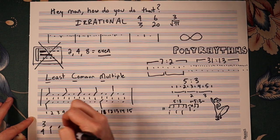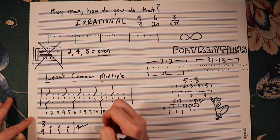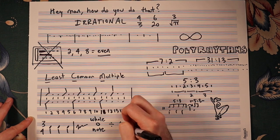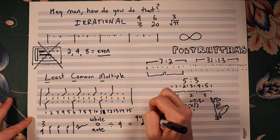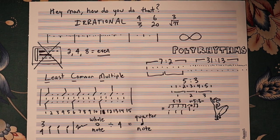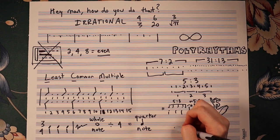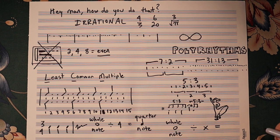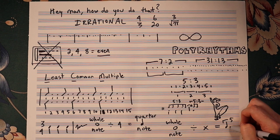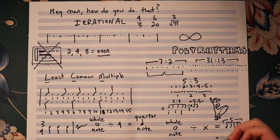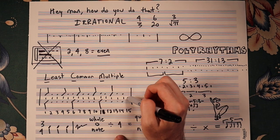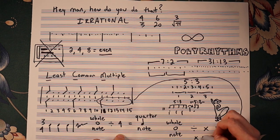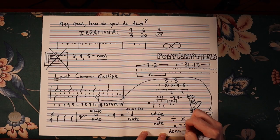David's example happens to be 5 over 3, but we need to remember that time signatures are always written in reference to a whole note. For example, the time signature 3 over 4 means we play 3 quarter notes, and quarter notes are derived from dividing a whole note into 4 pieces. The least common multiple of our 5 over 3 example results in subdividing a quarter note into 5. That means we subdivide a whole note by 20.